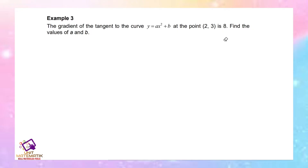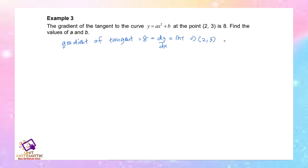Example 3: The gradient of the tangent to the curve y = ax² + b at the point (2, 3) is 8. Find the values of a and b. The gradient of the tangent is 8, which equals dy/dx at the point (2, 3). We find dy/dx from the curve.